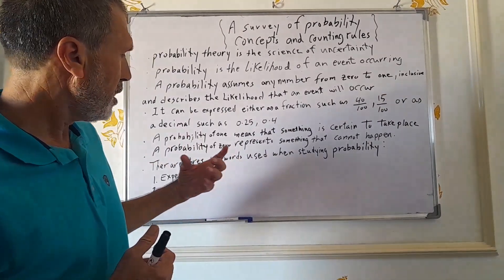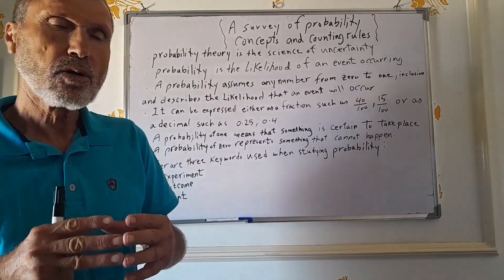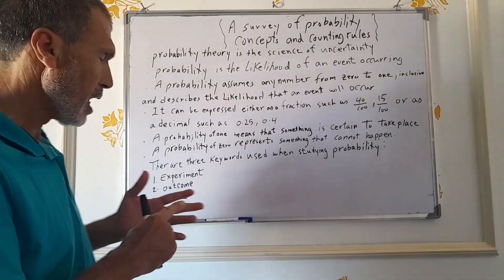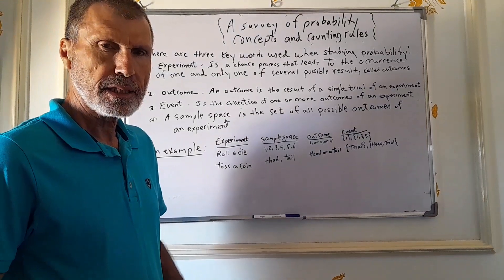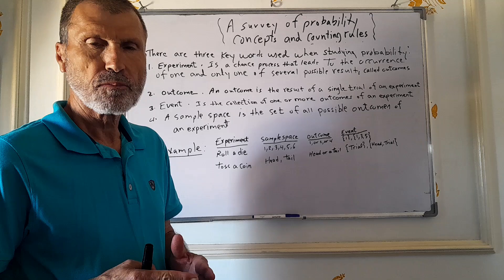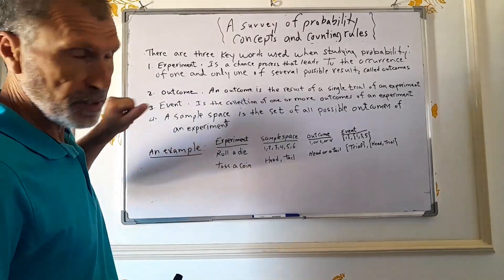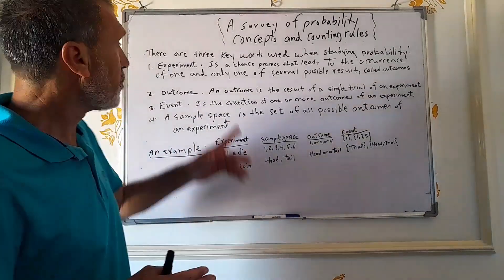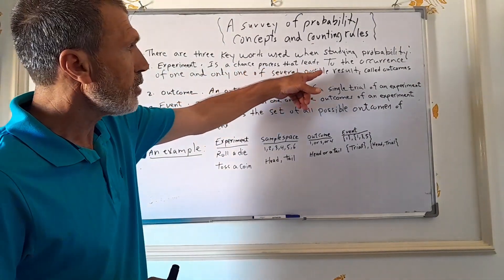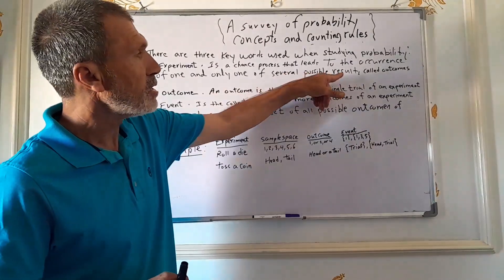When studying probability, we go through three key words: experiment, outcome, and event. There are three key terms involved. They are experiment, outcome, and event.